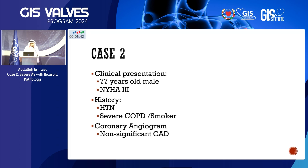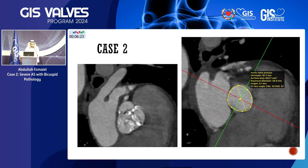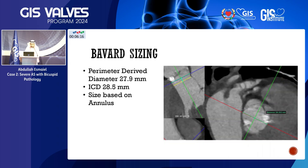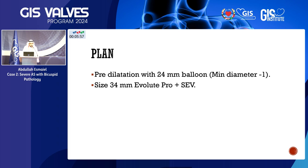Case two is a 77-year-old gentleman presenting with NYHA class III symptoms, hypertensive, severe COPD, and non-significant CAD. He had severe aortic stenosis with EF 45–50%. Sent for surgery, the patient was declined by the surgeon due to severe COPD, so we proceeded with TAVR. CT showed a Sievers type 1 anatomy with annulus perimeter of 87.7, perimeter-derived diameter of 27.9, and ICD 4 mm above the annulus of 28.5. We sized based on the annulus. Left coronary height was 10.9 mm. We planned to pre-dilate with a 24 mm balloon (minor diameter plus one) and implant a 34 mm Evolute Pro self-expandable valve.